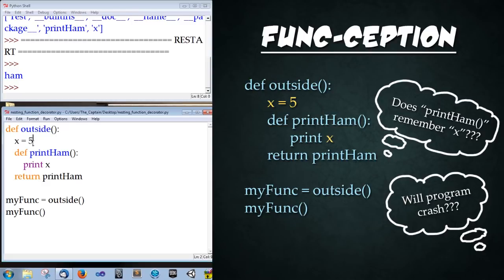The x is created in local space for the outside function so that means after it executes x is no longer in existence. So if I were to type print x it would crash the program but we are setting the function print ham equal to this one. So will it be able to access x after it's exited that? Well let's go ahead and run it and find out. Press f5 to run and it spits out 5 perfectly.